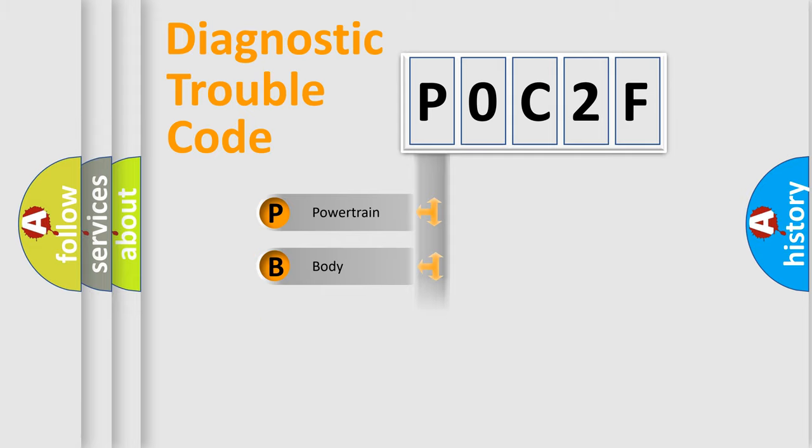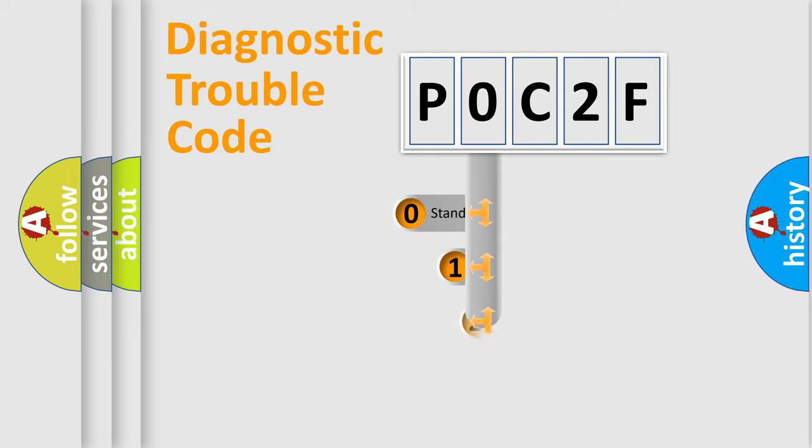Powertrain, Body, Chassis, and Network. This distribution is defined in the first character code.